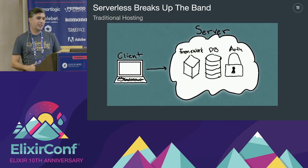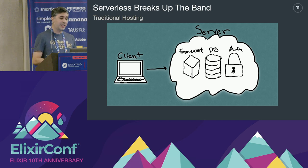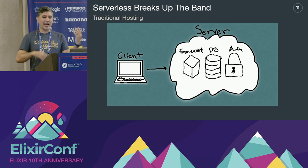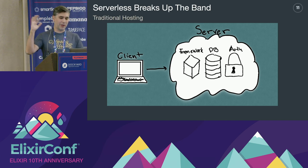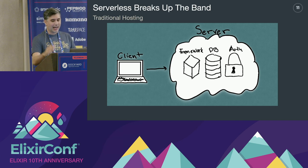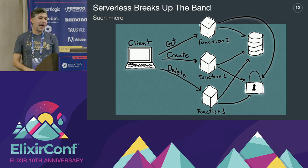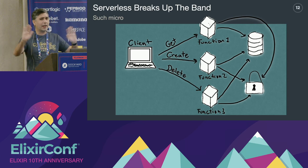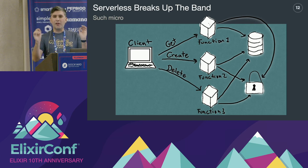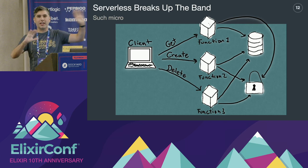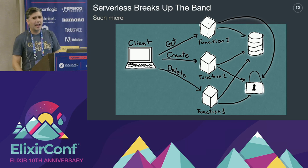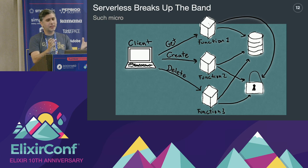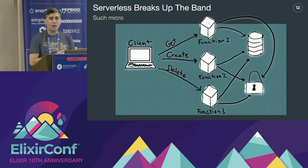To visualize that change: traditional hosting architecture has the client, your server, your framework — Rails, Phoenix, Node — your database, your authentication, all living in the cloud. Serverless breaks that all up. Now the logic is kind of in your client. Your client has to decide where web requests go, and each action — gets, destroys, updates — are individual little functions hosted in the cloud. Your database is a separate service, your authentication is a separate service, because you're dealing with stateless stuff.